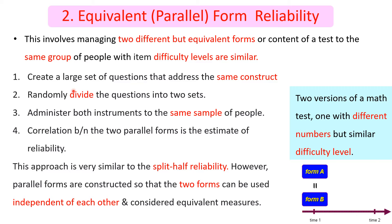There are certain procedures to conduct equivalent or parallel form reliability. First, create a large set of questions addressing the same construct. Then randomly divide the questions into two sets. Third, administer both instruments to the same sample of people. After that, correlate the scores between the two parallel forms, which estimates the reliability.